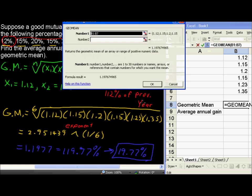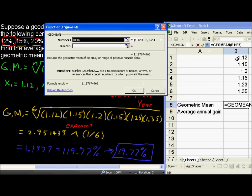So that looks good to us. GeoMean of what? And Excel automatically chooses, it tries to figure out what you're going to do. It says B1 to B7. However, we only have cells B1 through B6.